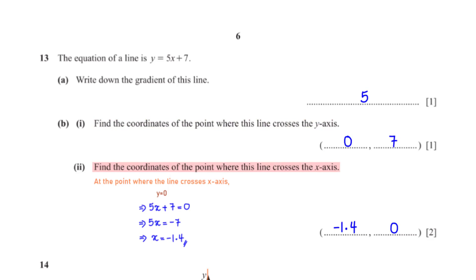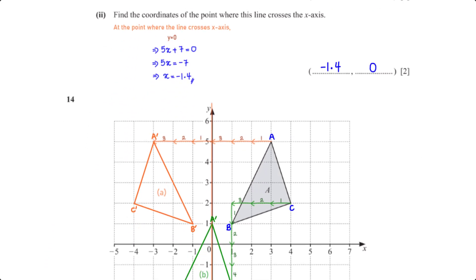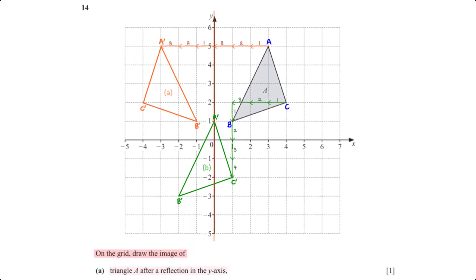Find the coordinate of the point where this line crosses the x-axis. At that point the y-coordinate is 0. Substituting y = 0 gives 5x + 7 = 0. Subtracting 7 from both sides and dividing by 5 gives x = −1.4, so the coordinate is (−1.4, 0).